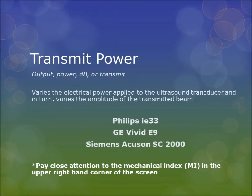Transmit power, also known as output, power, decibels, or transmit. The transmit power varies the electrical power applied to the ultrasound transducer and, in turn, varies the amplitude of the transmitted beam. You will see the transmit power demonstrated on the Philips IE33, the GE Vivid E9, and the Siemens Accuson SC2000.